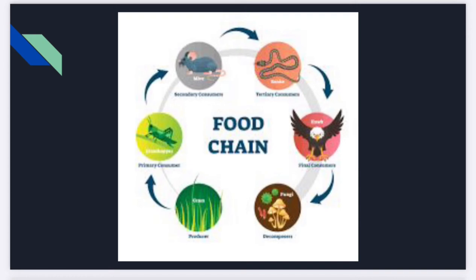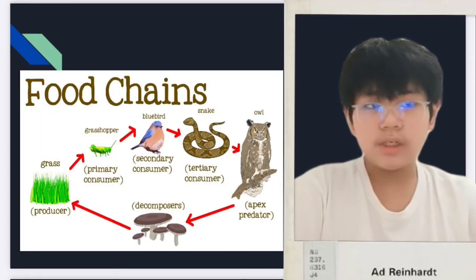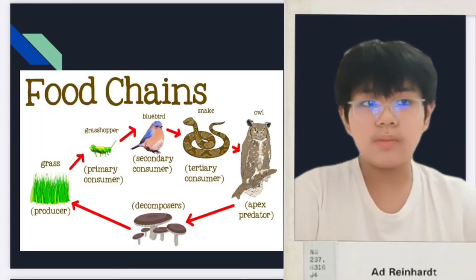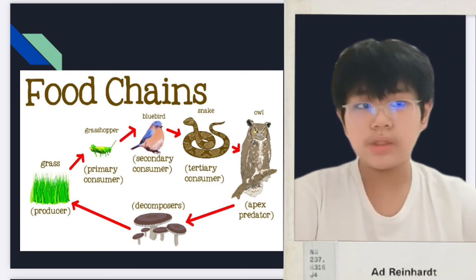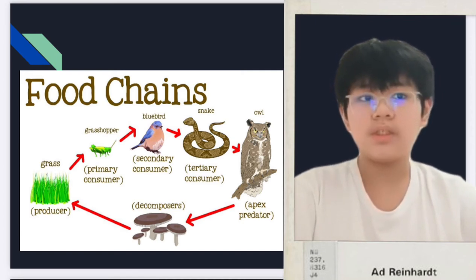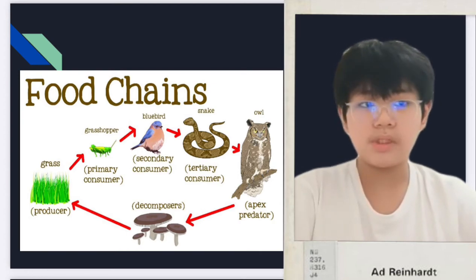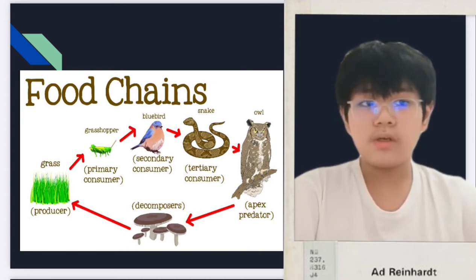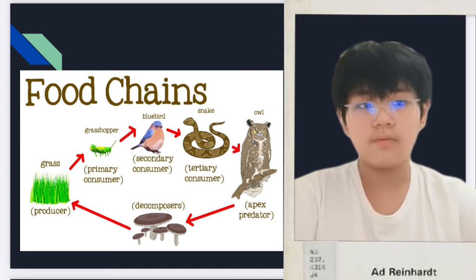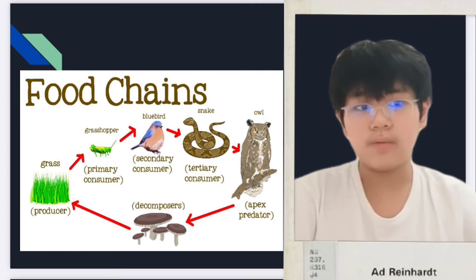Let's start with the food chain. The food chain is a linear network of links starting from the producer organisms and ending at an apex predator species or decomposer species. A food chain also shows how each species are related to each other by the food that they eat. Each level of a food chain represents a different trophic level.